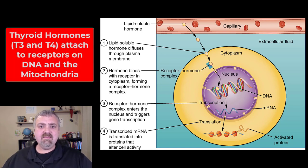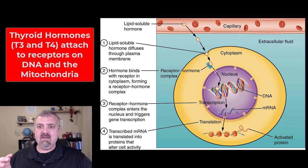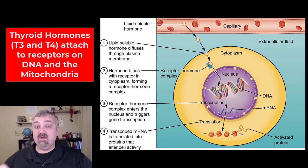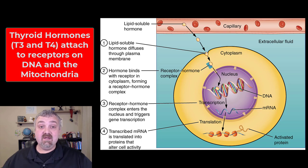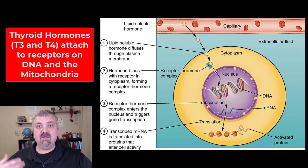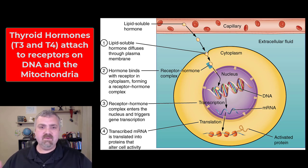Your thyroid hormones are going to do the same thing. They can dock and bind right on your DNA, but they can also bind right on the mitochondria because they're going to be responsible for your metabolism. So they're going to impact higher mitochondria function.